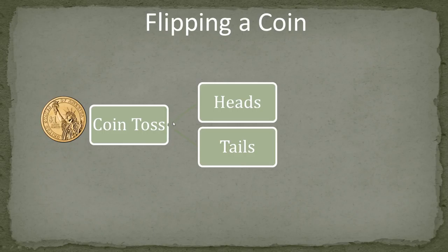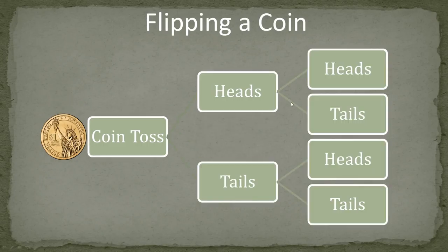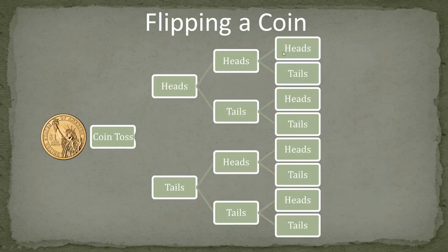So our first tree: one option goes to heads and the second option goes to tails. When we flip our second coin, both of those have the option of going to heads or tails. And then again when we flip the third time, those each have the option of heads or tails. So each of these options has another option of heads or tails — this is our third coin toss.